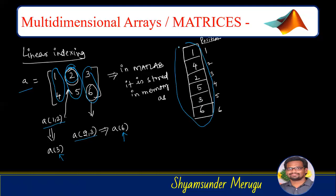Column-wise appending is done and elements are arranged vertically. The positions are: position 1 stores 1, position 2 stores 4, position 3 stores 2, position 4 stores 5, position 5 stores 3, and position 6 stores 6. To access element 2 using single indexing, type A(3), since 2 is stored at the third location. To access element 6, type A(6). Accessing matrix elements using single indexing is called linear indexing.